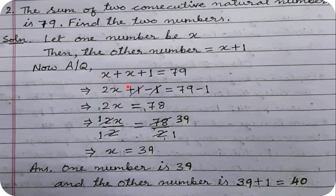To get rid of the +1, we subtract 1 from both sides. On the left hand side, 1 minus 1 is zero, so only 2x remains. On the right hand side, 79 minus 1 is 78.